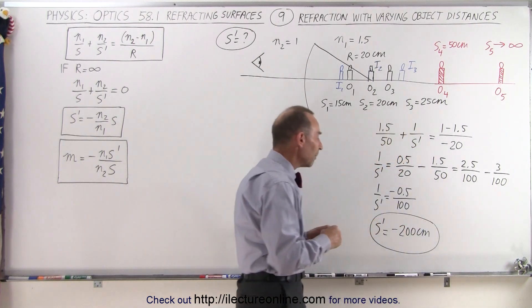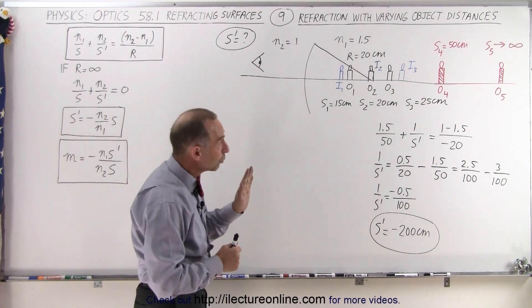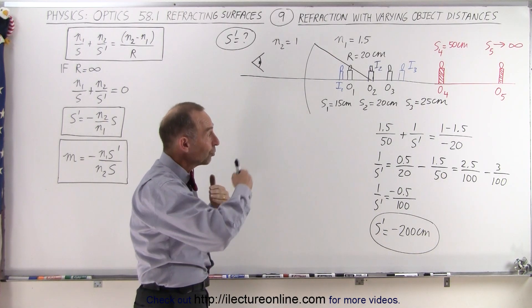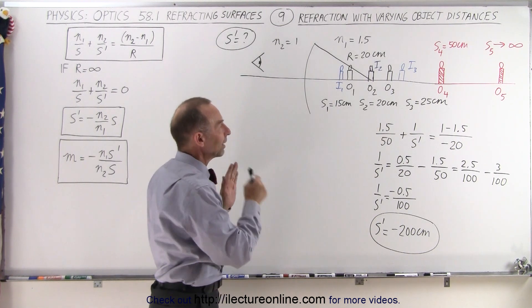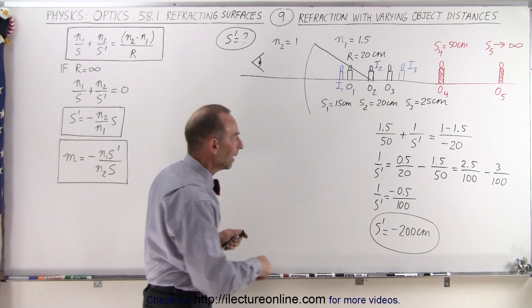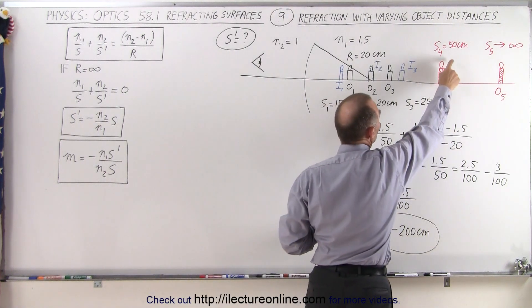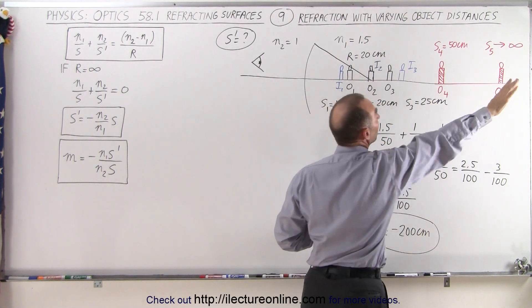So here you can see the pattern: as the object moves far to the right, the image moves far to the right by a much greater extent. You can see that it's moving much faster to the right as the object moves to the right. And when the object reaches a distance of 50 centimeters, the image will now be 200 centimeters away.